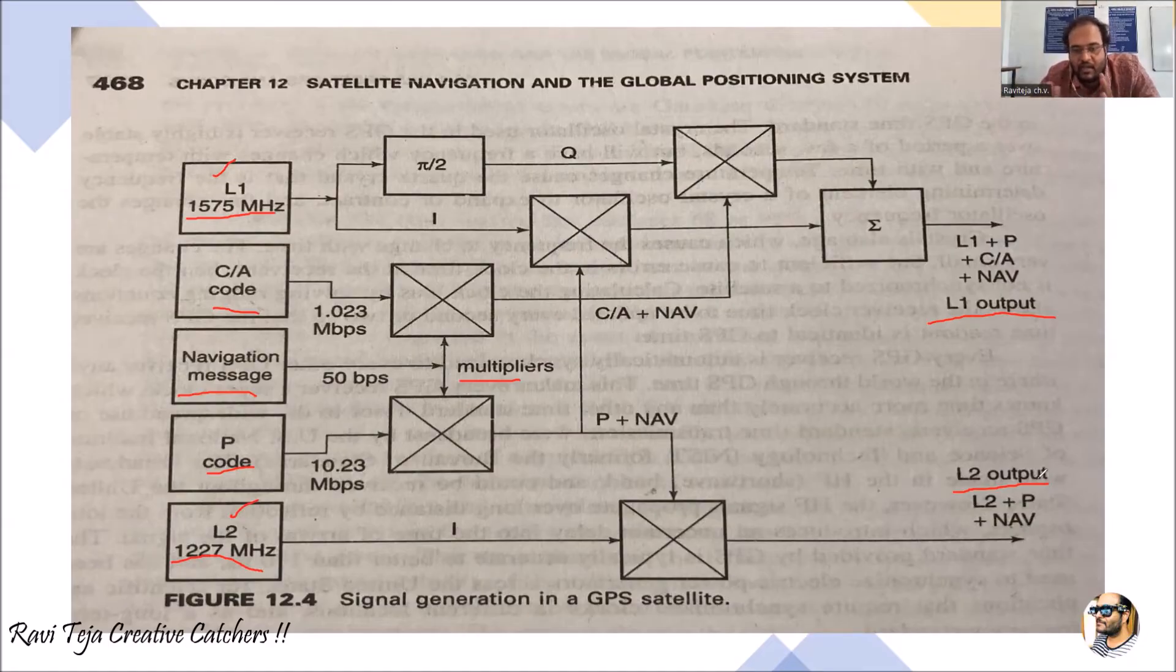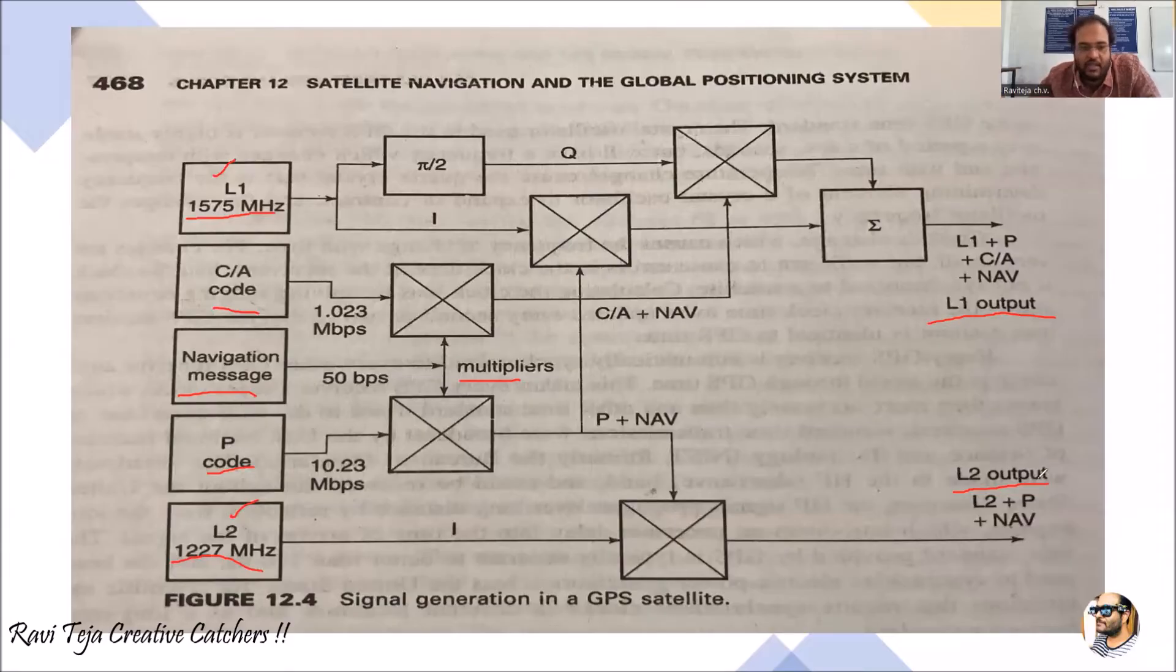With respect to L1 we will be obtaining one output and with respect to L2 we will be obtaining some other output. This L1 and L2 will be having with respect to the navigation message. For L1 it will be a C/A code combination, for L2 it will be a P code combination.